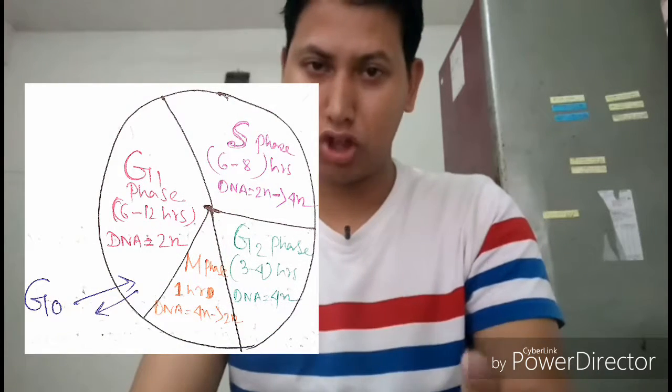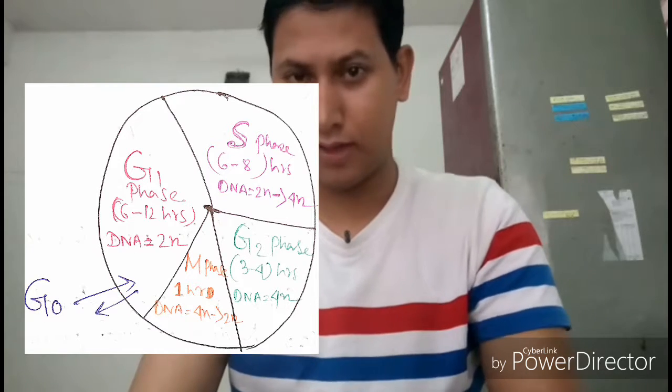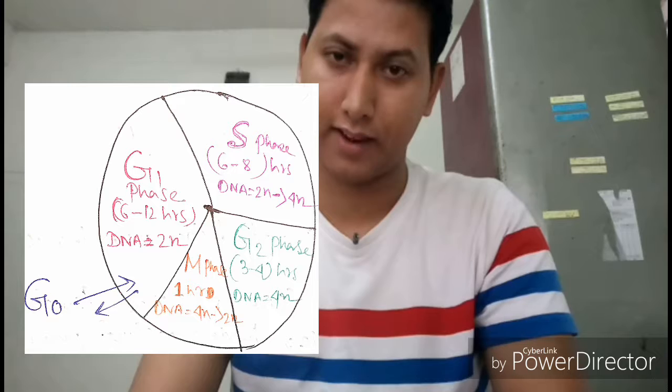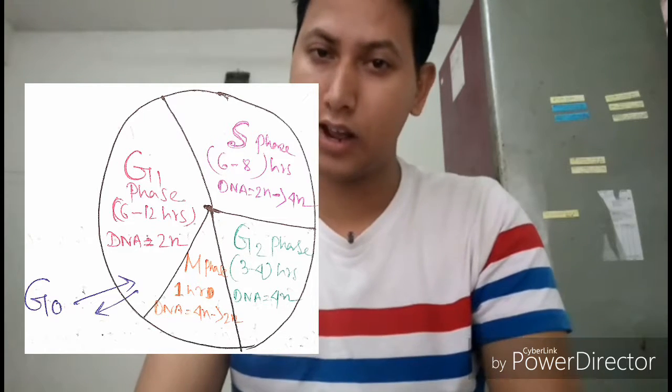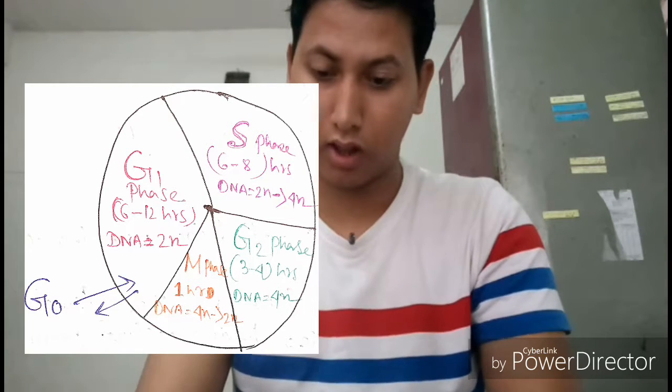We are going to talk about G1 phase with our synthesis. We have a specific application. If we make a copy in G1, the DNA is duplicated. The S phase is about 6–8 hours.